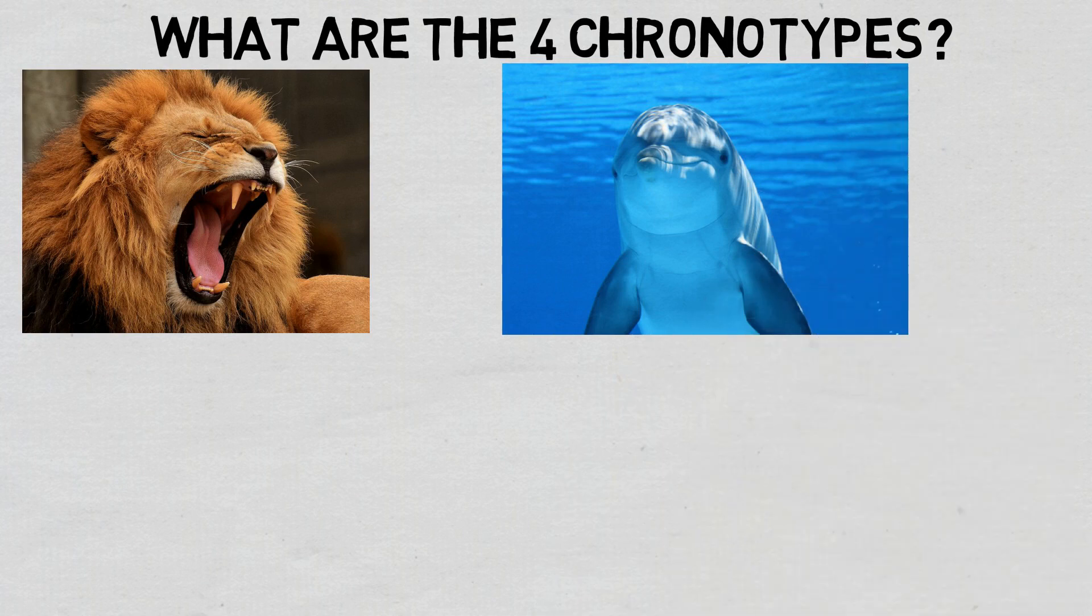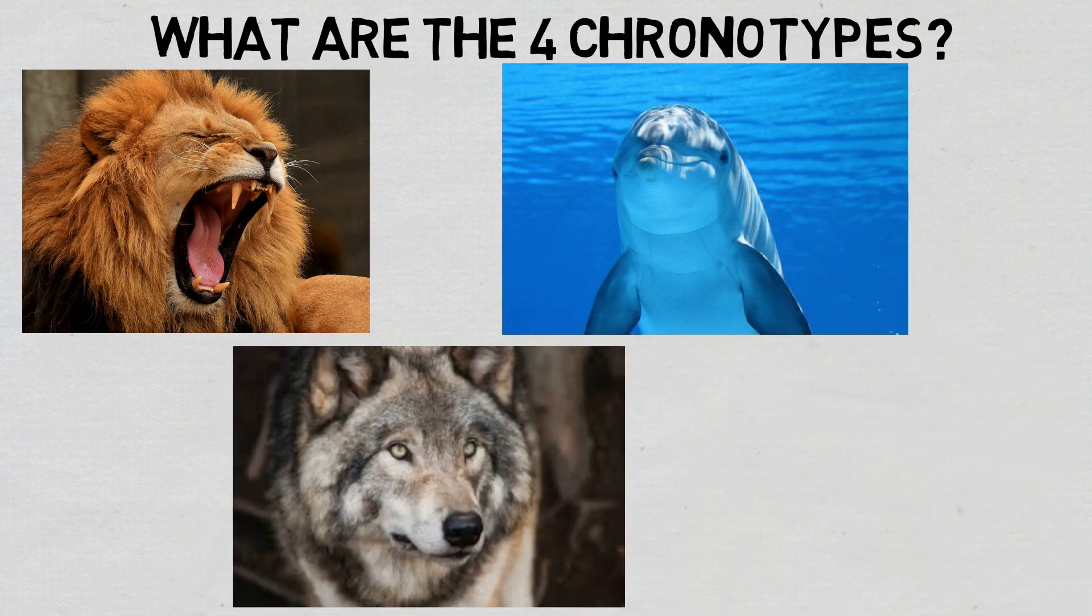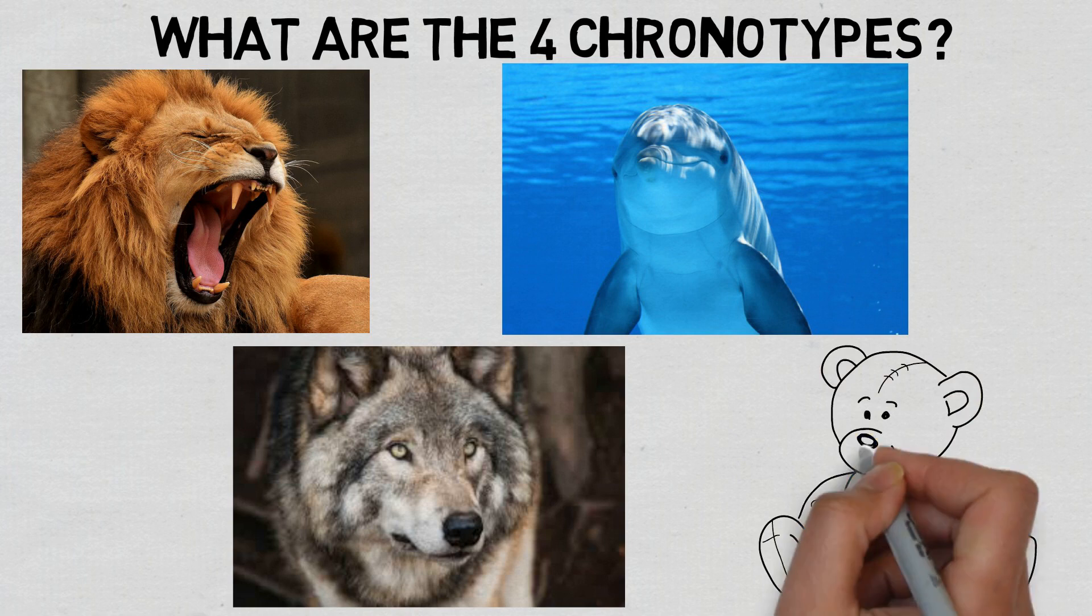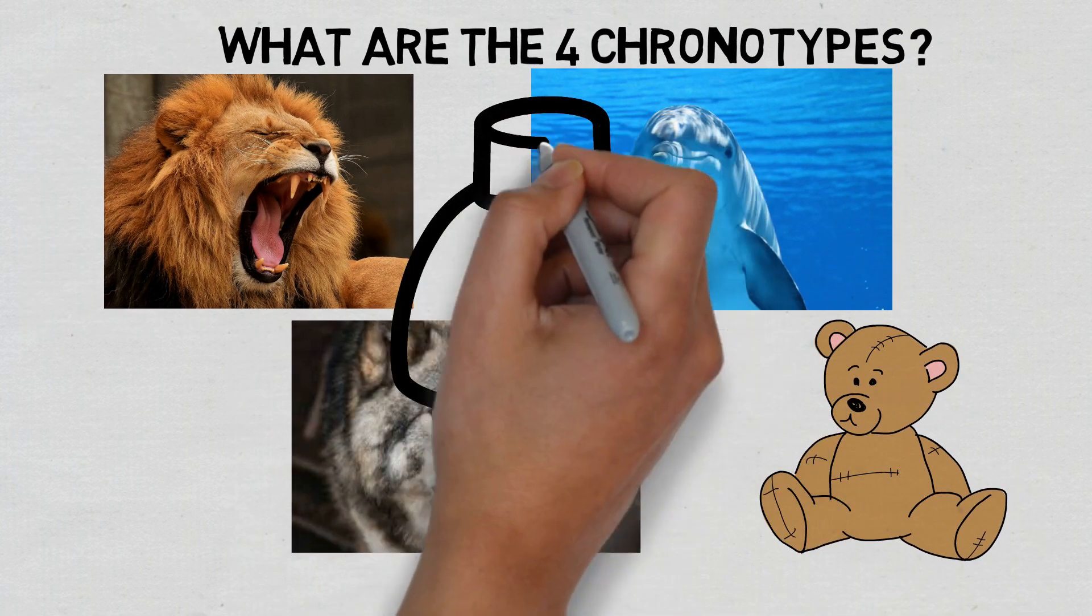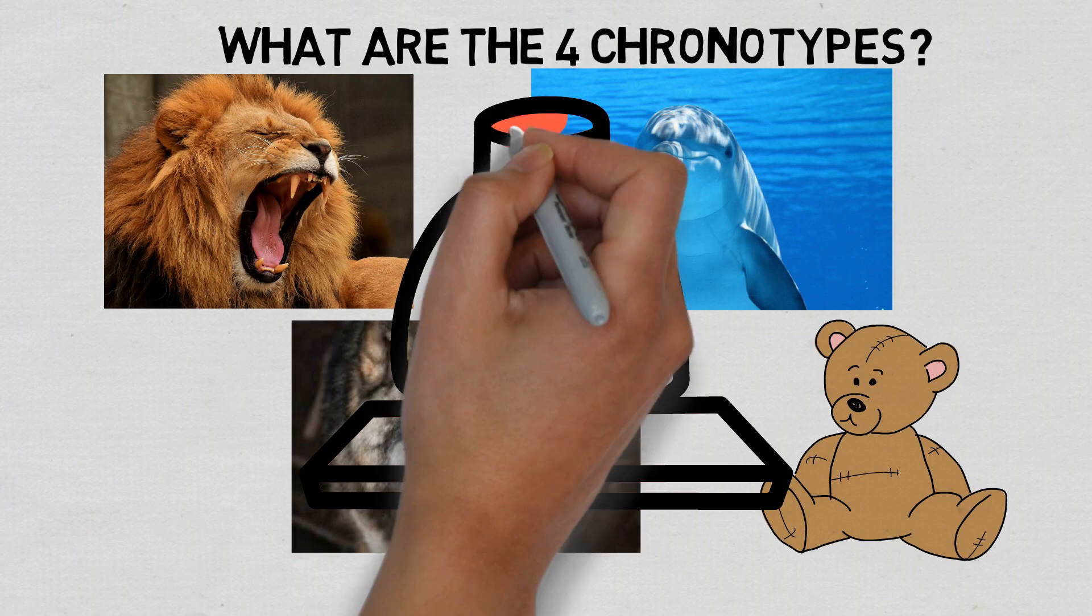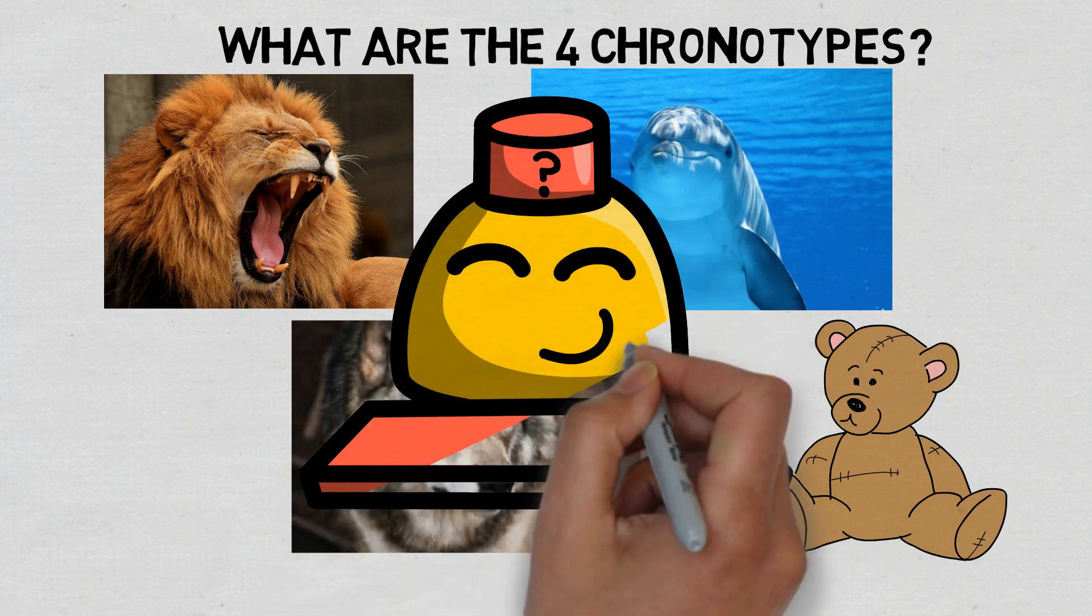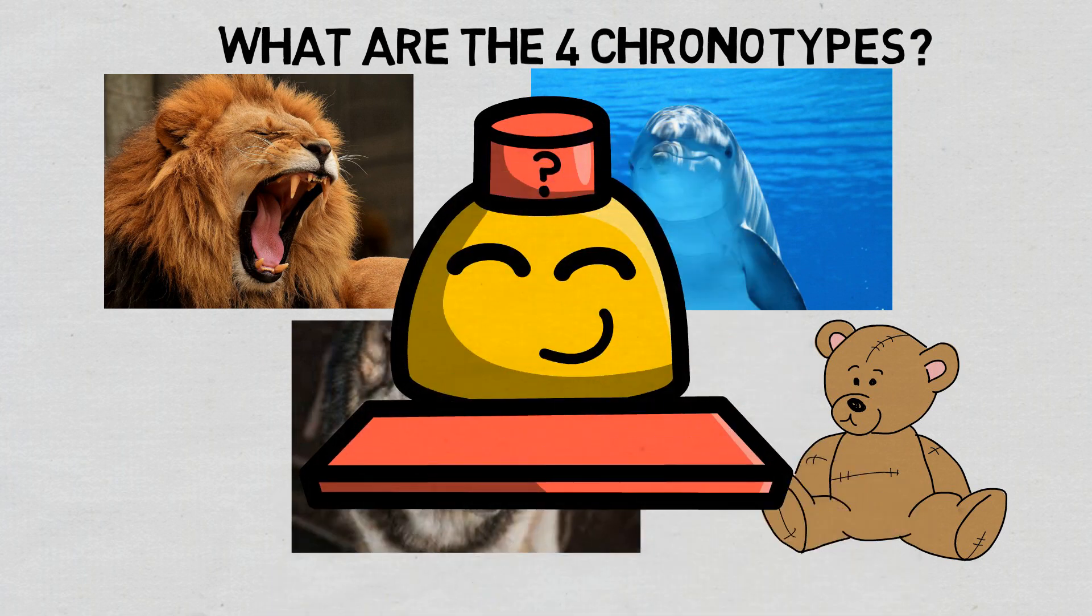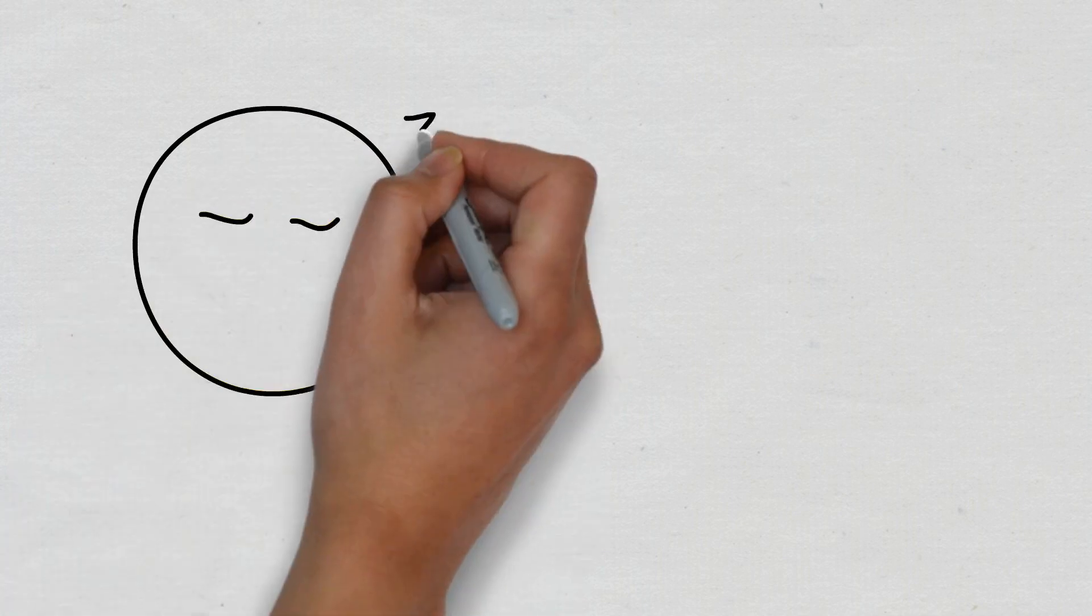So to go straight to the point, there are four chronotypes. These are lions, dolphins, wolves, and bears. You can of course take a quiz very easily to find your chronotype, and that will be quite surely a more reliable way of determining your chronotype. But for those of you who are a bit tight on time, I'll give you some quick clues to help you find your chronotype.